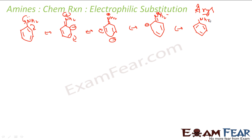If you see here, the NH2 group is an ortho and para-directing group. As I told, the NH2 group is an ortho and para-directing group and it is a powerful activating group. The electron density is rich at ortho and para positions, so electrophiles — which are electron hungry — can easily attack those positions.